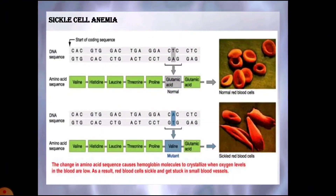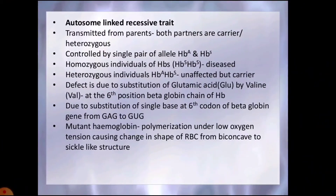Sickle cell anemia is an autosome-linked recessive trait transmitted from parents to offspring when both partners are carriers and both are heterozygous. The disease is controlled by a single pair of alleles, HbA and HbS. Out of the three possible genotypes, only the homozygous individuals with HbS and HbS show the diseased phenotype. The heterozygous individuals with HbA and HbS appear unaffected but are carriers of the disease, with a 50% probability of transmitting the gene to the progeny.